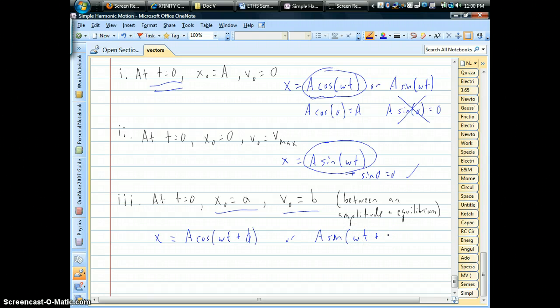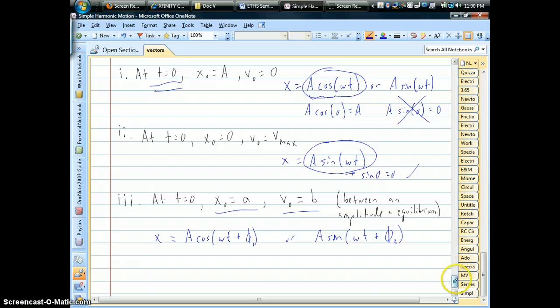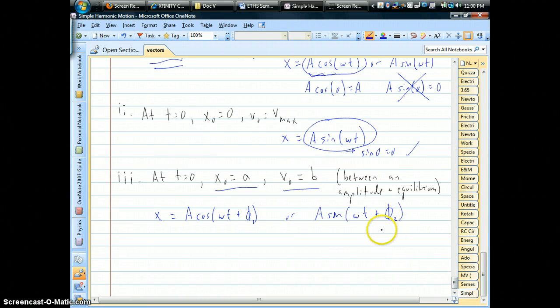Except you'd have a different phase angle. Maybe we'd call it phi two, and this would be phi one. That would be the only difference between these two solutions. Nothing's going to affect the amplitude. Which one you choose won't affect your angular frequency.